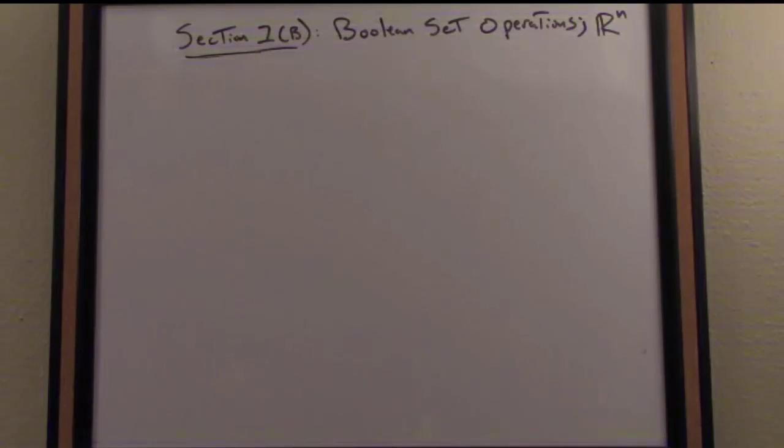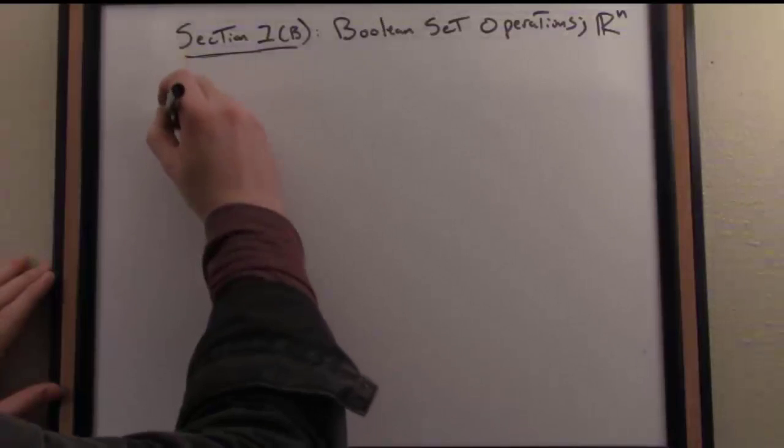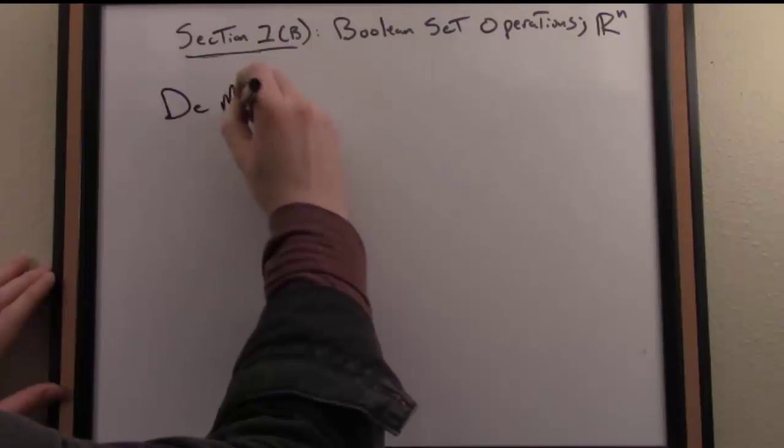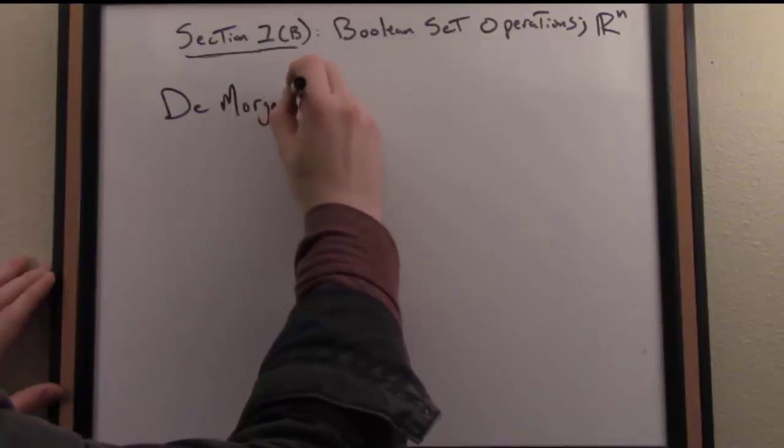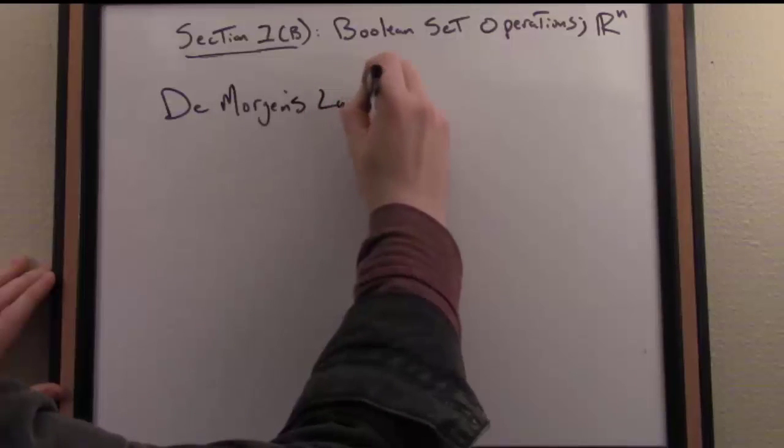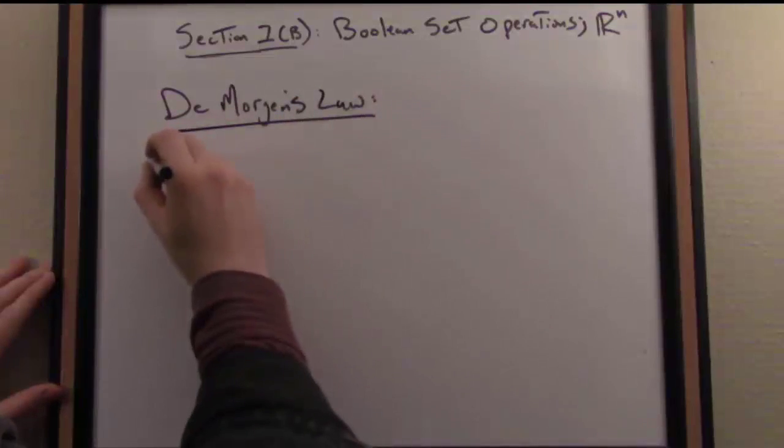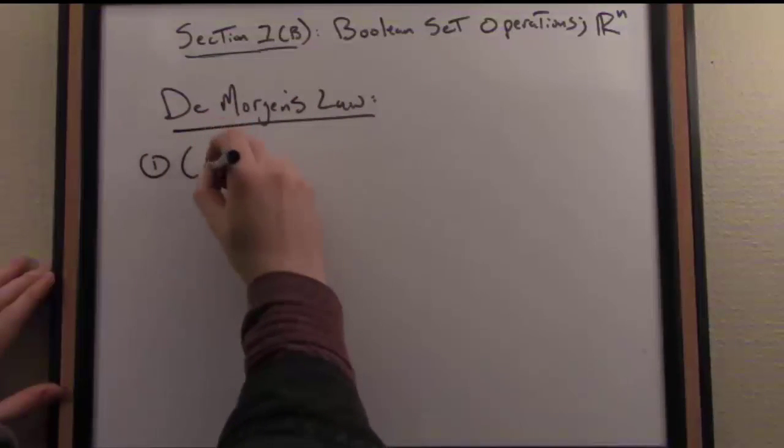Nonetheless, I would like to give you a feel for what a set identity looks like. One of the best known of them all is something called De Morgan's Law, and De Morgan's Law comes in a pair, so there's two variants of it, but they're very complementary as we'll see in a moment.